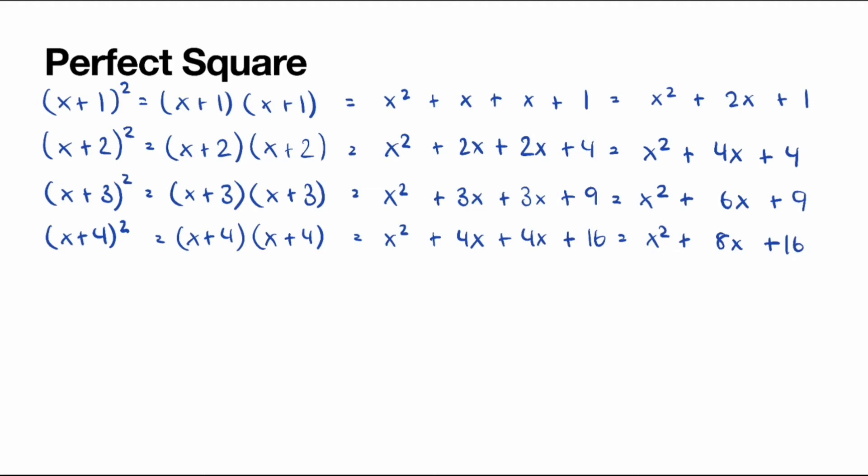So do you spot the pattern here? We have x squared plus 2x plus 1; x squared plus 4x plus 4; x squared plus 6x plus 9; and x squared plus 8x plus 16. If you look carefully, the number in front of the x is 2 times the number inside the bracket. So for x plus 1 squared, we have x squared plus 2, which is 1 times 2.